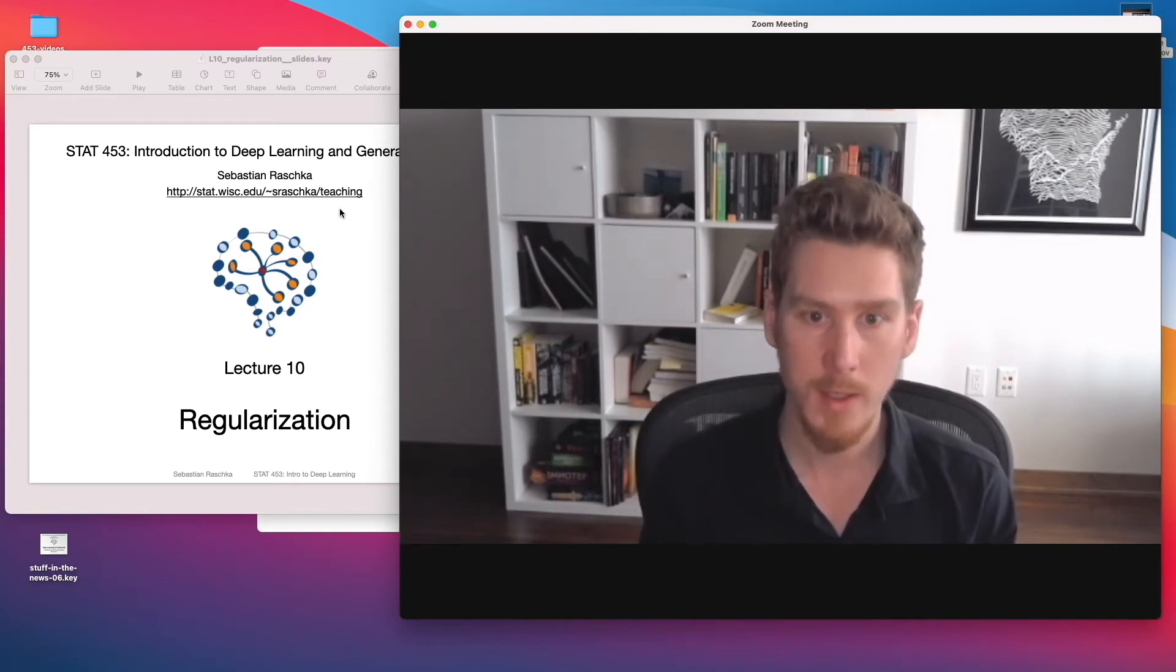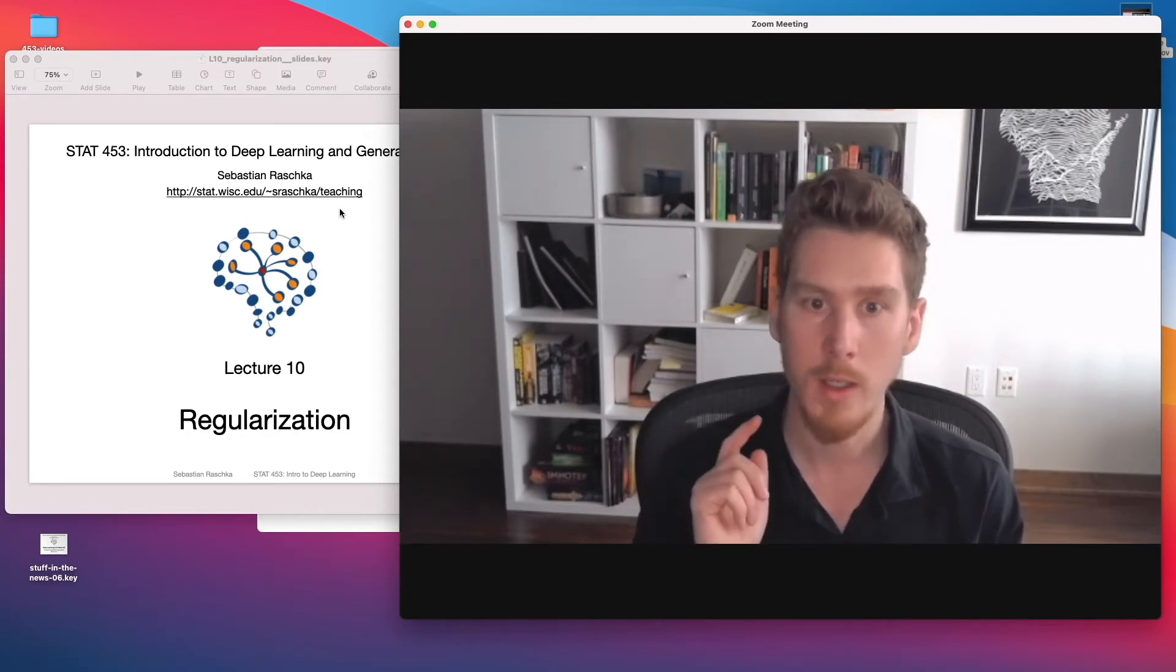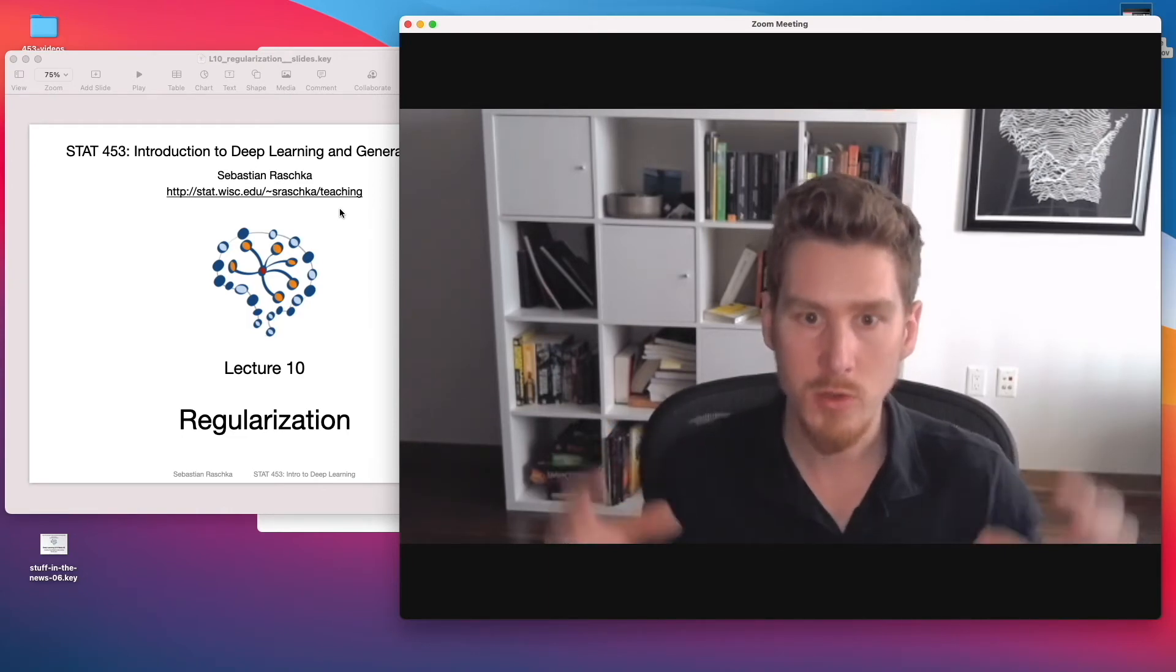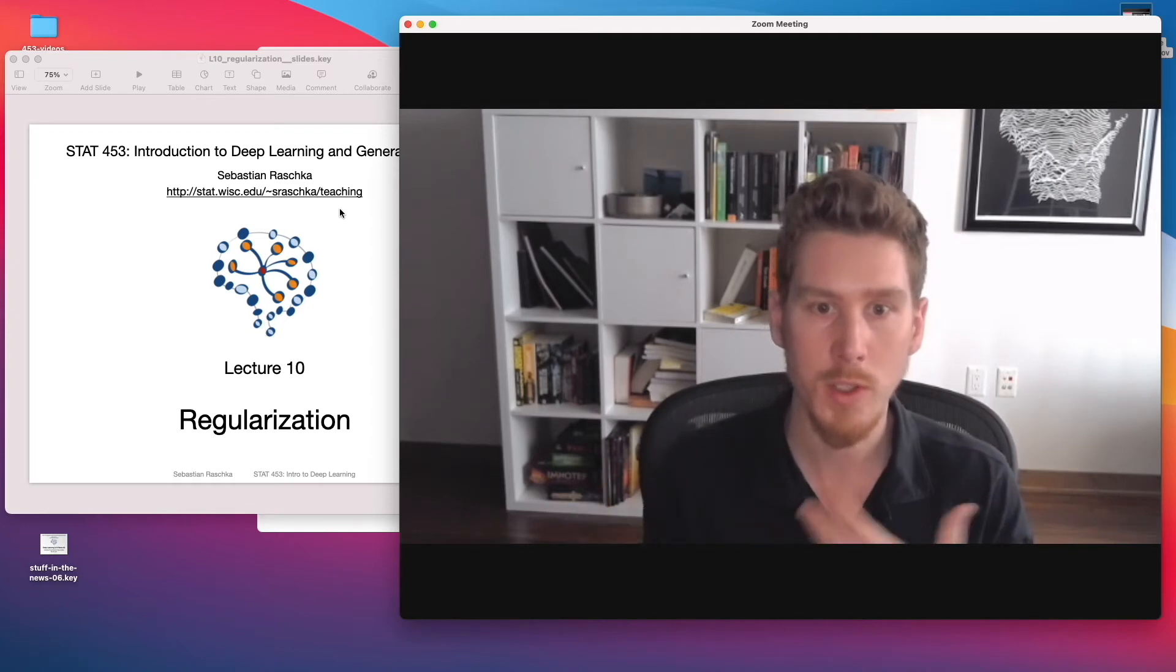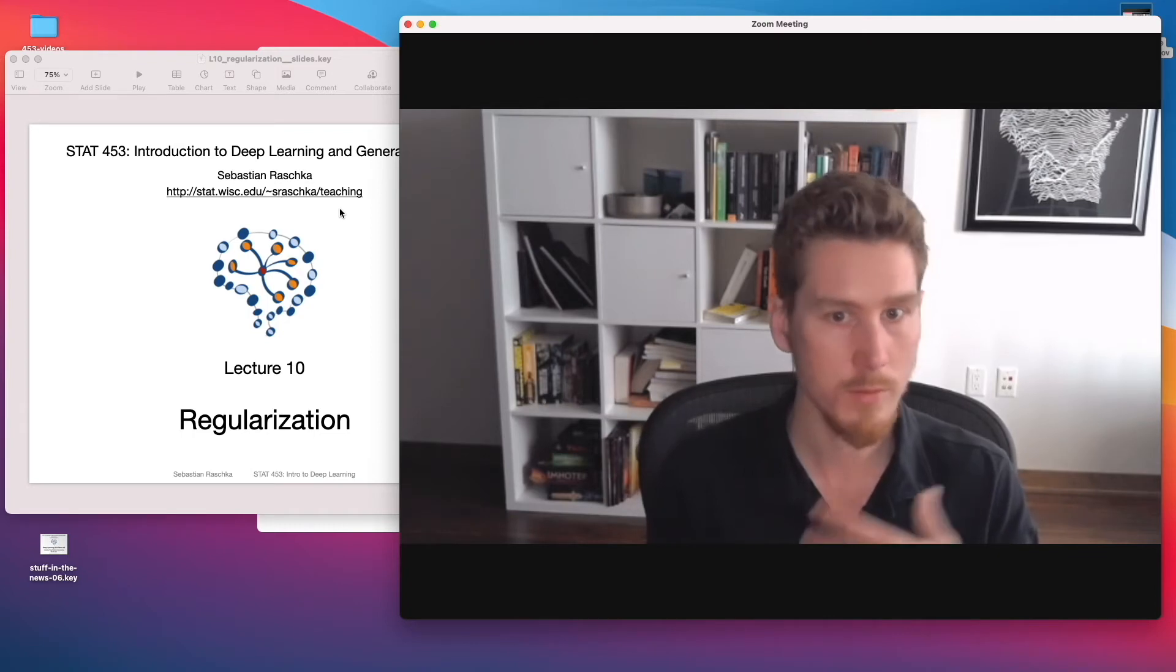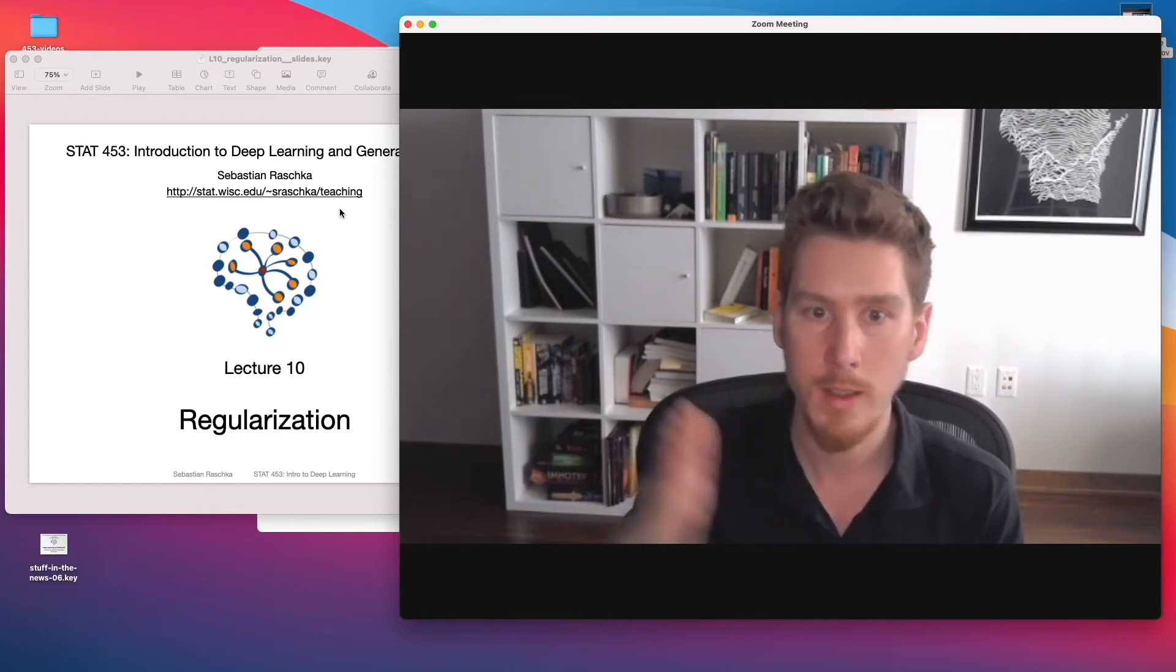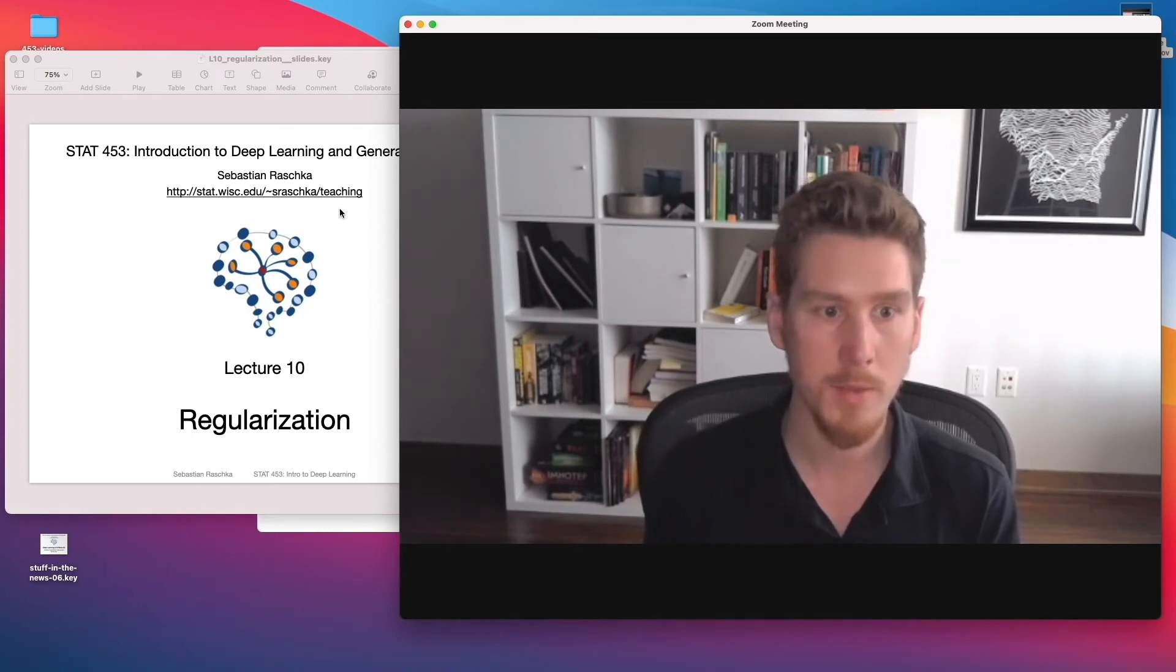Of course, there are many other techniques to improve neural network training. We will talk about this in later lectures, for example, different weight initialization schemes, batch normalization, also choosing different optimizers and so forth. These are just techniques I'm presenting right now that affect the weights. But later on, we will also use techniques that modify the optimizer, and also affect the normalization of the input samples or hidden layer activations. With that, let me not make the introduction too long and let me just get started with the lecture.